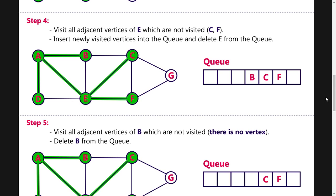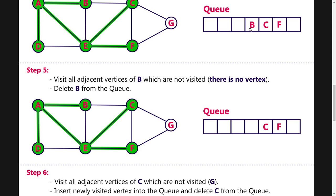Next, C is F. We delete from the queue. Then we visit B. If we look at B, its adjacent nodes A and C are already visited. Visit all adjacent vertices of B which are not visited — there are no remaining unvisited vertices. All are already visited, so we delete B.